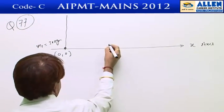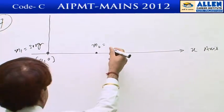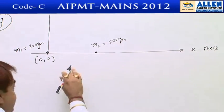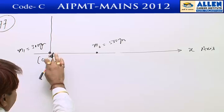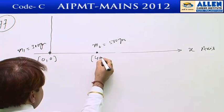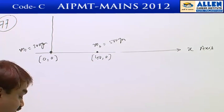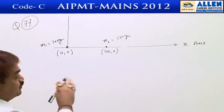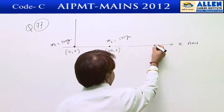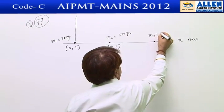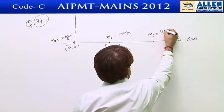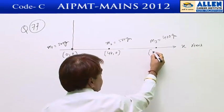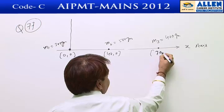The second particle's coordinate is (40, 0). The third particle has mass m3 equals 400 grams, placed 70 centimeters from the origin along the x-axis, so its coordinate is (70, 0).